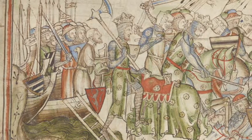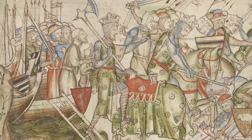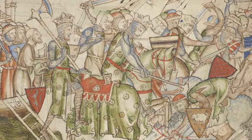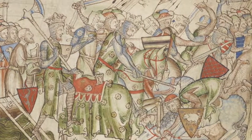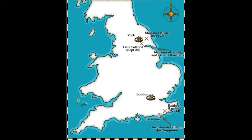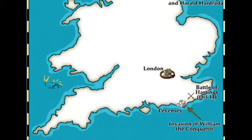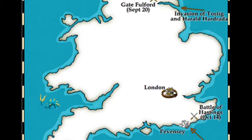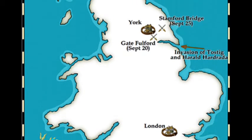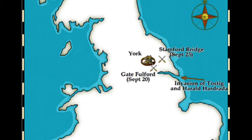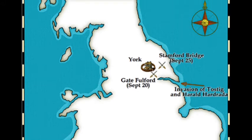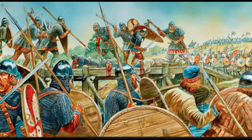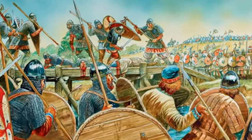Less than four weeks before the battle, the northern English army had been defeated by King Harold Hardrada of Norway during the Battle of Fulford. Harold had been waiting on the south coast, expecting an invasion by William, but Hardrada's invasion and seizure of the city of York forced him to rush north. Here, his forces defeated the Norwegians at the Battle of Stamford Bridge on September 25.